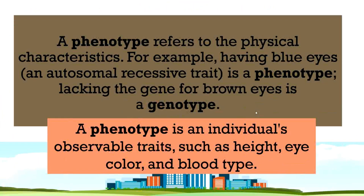Now we have phenotype. A phenotype refers to the physical characteristics. For example, having blue eyes is an autosomal recessive trait. A phenotype lacking the gene for brown eyes relates to genotype. A phenotype is actually the observable physical characteristics — for example, you are tall, I am short, you have curly hair, she has straight hair. Those are phenotypes. Genotype, on the other hand, is represented by letters — the letters represent the gene. A phenotype includes observable traits such as height, eye color, and blood type.